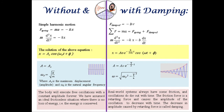The angular frequency of the oscillation is no longer equal to the square root of k over m, but is somewhat smaller. Omega equals the square root of (ω₀² minus γ²/4).